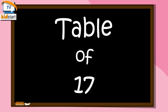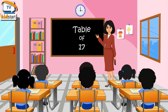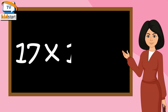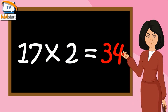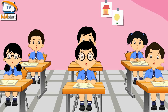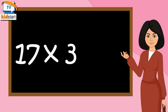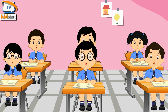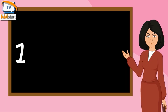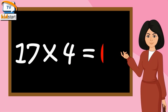Table of Seventeen. Seventeen ones are seventeen. Seventeen twos are thirty-four. Seventeen threes are fifty-one. Seventeen fours are sixty-eight.